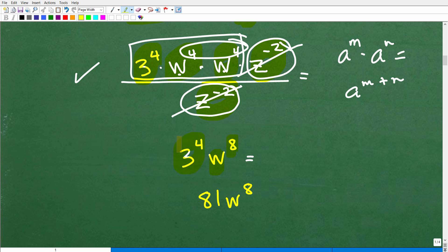So that's going to be w to the 8th. And then here I have 3 to the 4th. Okay, so we're almost there. So now we want to evaluate 3 to the 4th, which, of course, is 3 times 3 times 3 times 3 or 9 times 9, which is 81. So your final answer should be 81 w to the 8th power.